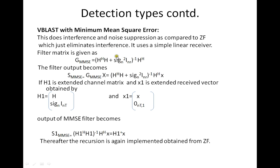Next is the minimum mean square error (MMSE) detection method. The difference from zero-forcing is that MMSE performs both interference and noise suppression, whereas zero-forcing only eliminates interference. MMSE uses a simple linear receiver. At low SNRs it acts as a matched filter, and at high SNR it tends to act as a zero-forcing technique. The recursion algorithm is similar to zero-forcing; the main difference is in the filter matrix.